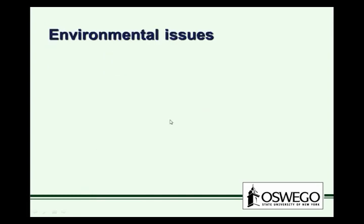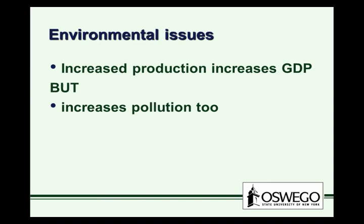Environmental issues in GDP are also a problem. Increased production could increase GDP — for example, increases in energy production in the United States would increase gross domestic product. But with energy production often comes pollution as well, and that affects well-being. GDP doesn't fully account for that.